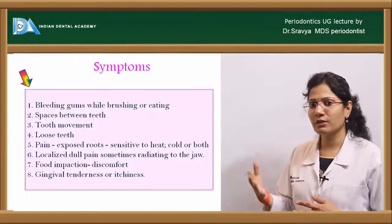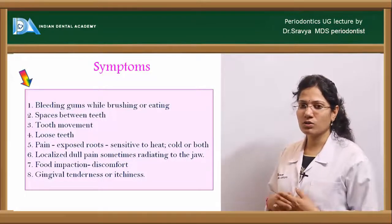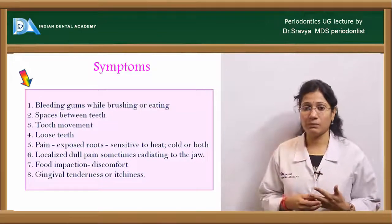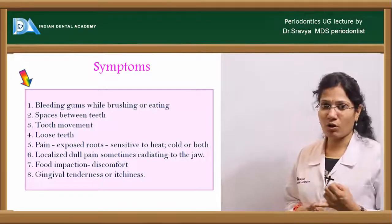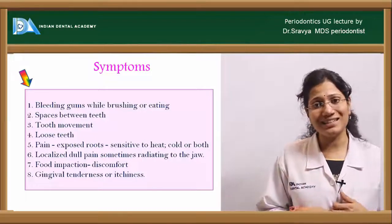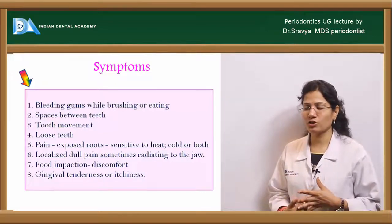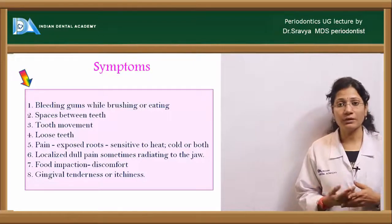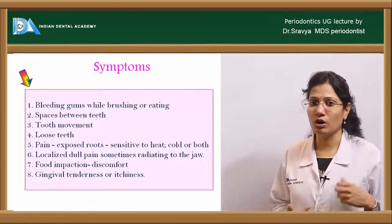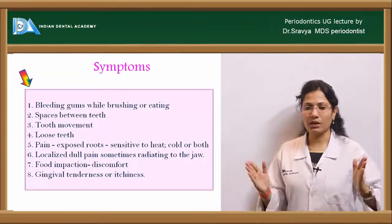Looking at signs and symptoms — patients commonly complain of bleeding gums, which may occur during brushing, eating, or spontaneously. They may also report increasing spaces between teeth, which can be due to pathologic migration from chronic periodontal disease or the slow attachment and bone loss characteristic of chronic periodontitis, unlike the rapid loss seen in aggressive periodontal disease.